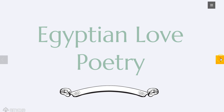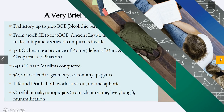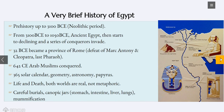So before we even look at the love poetry itself, let's talk a little bit about Egypt — very little, because it is needless to say very difficult to cover 5,000 years in one module, let alone if we had an entire semester to devote to it. When we look at Egypt, we are looking at the prehistory up to approximately 3100 BCE, before the Common Era.